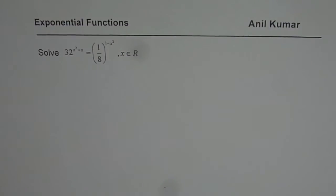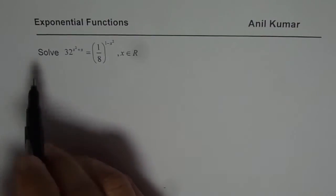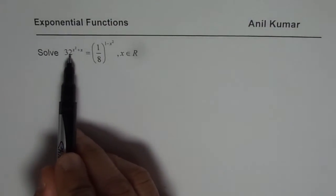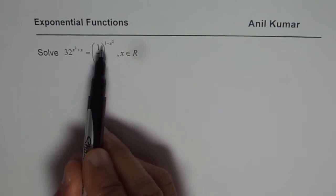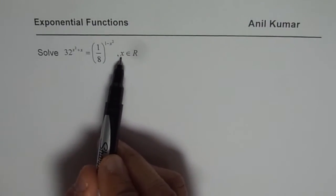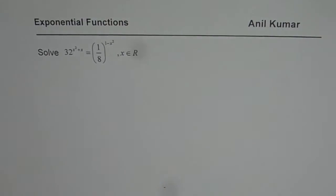I am Anil Kumar and now we will take a few challenge questions on solving exponential equations. We need to solve 32 to the power of x square plus x equals to 1 over 8 to the power of 1 minus x square where x belongs to set of real numbers.